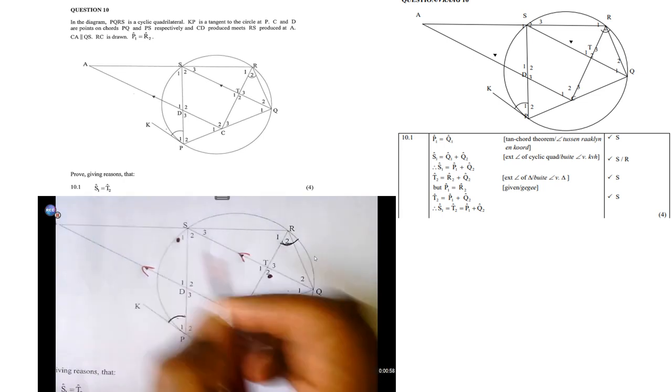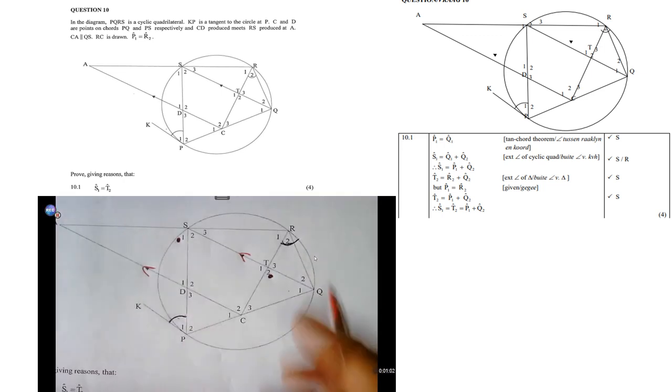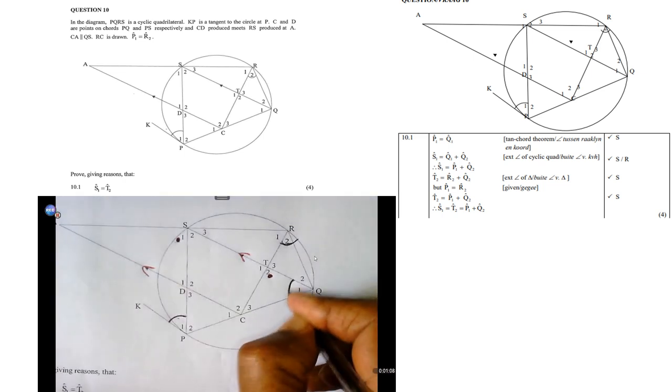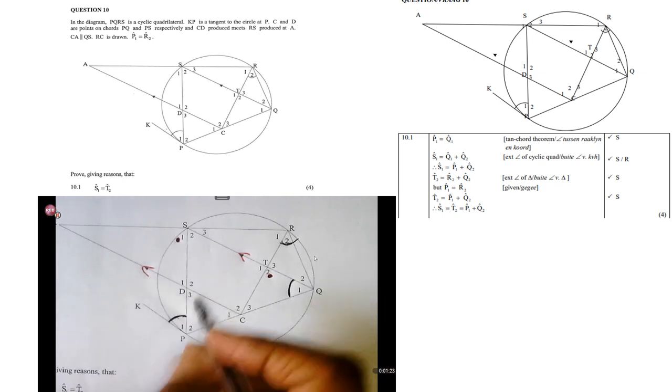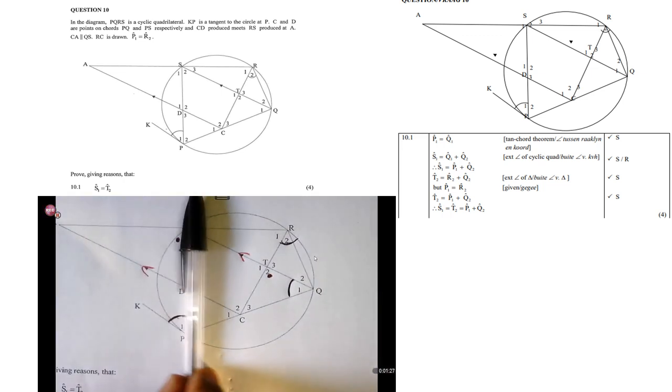P1 is equal to Q1. P1 here and Q1 are equal. What is the reason? Well, it is the tangent-chord theorem. Remember, this is a tangent, and it's the angle in the opposite segment subtended by PS. So it's the tangent-chord theorem.